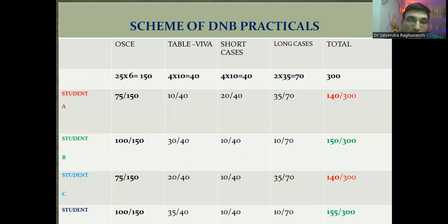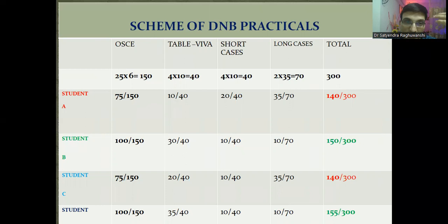Let's take another scenario for a DNB examination, where in place of spotters we have OSCE. Table viva is 40 marks, short cases 40 marks, two long cases of 35 marks each amounting to 70 marks, and the total practical is 300. OSCE is a major chunk of the DNB practicals. If you can score correctly in OSCE, you can definitely pass there itself. With table viva and OSCE alone, you can easily sail through.